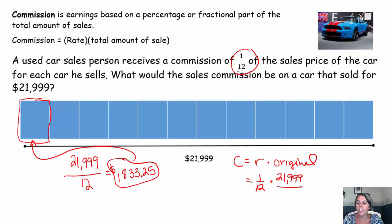$21,999 over 1, multiply straight across the top, straight across the bottom, you'll get $21,999 over 12. Fraction bar means to divide. And you'll end up, of course, with the exact same commission.